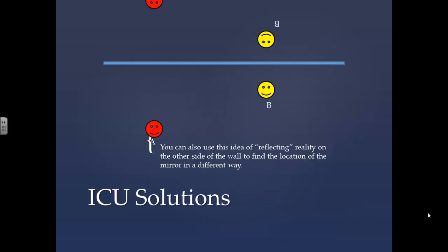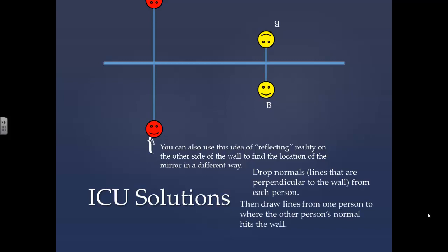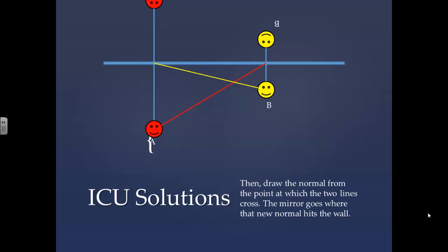You can also use this idea of reflecting reality on the other side of the wall to find the location of the mirror in a different way. Drop normals, lines that are perpendicular to the wall, from each person. Then draw lines from one person to where the other person's normal hits the wall. Then draw the normal from the point at which the two lines cross. The mirror goes where that new normal hits the wall.